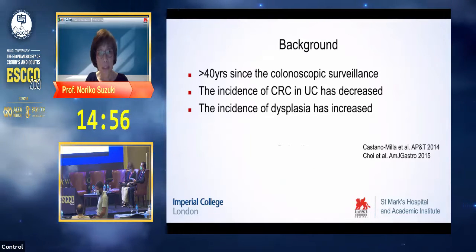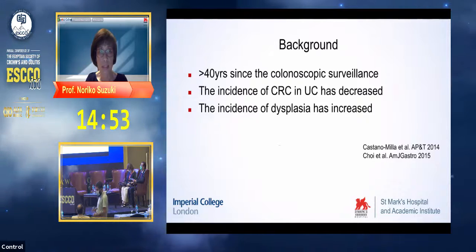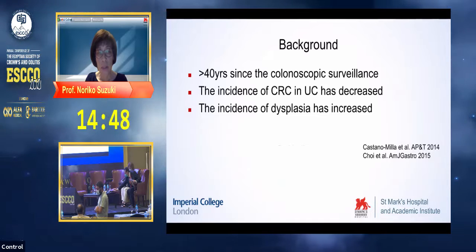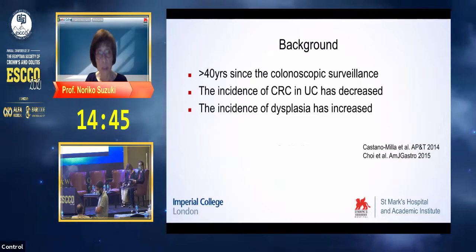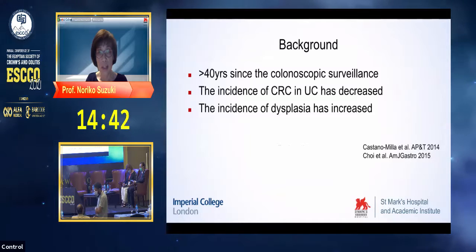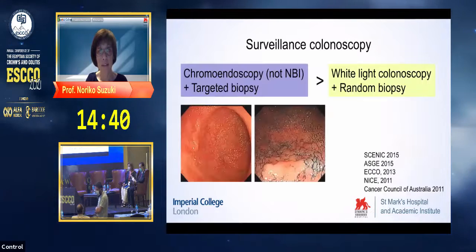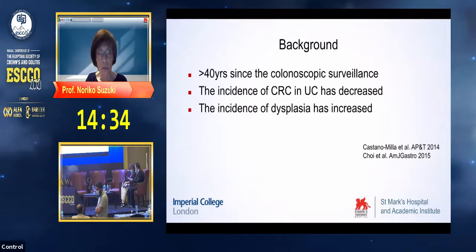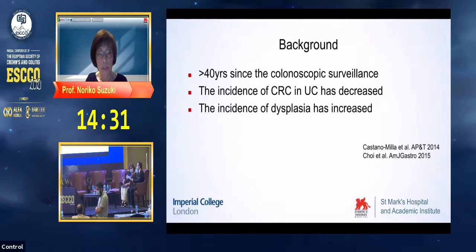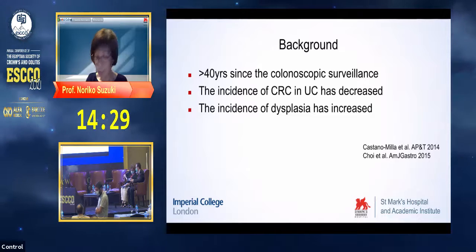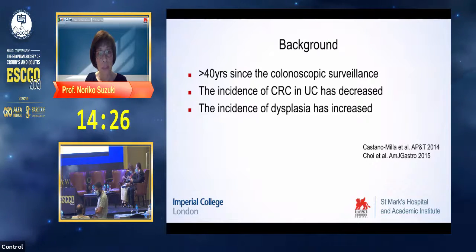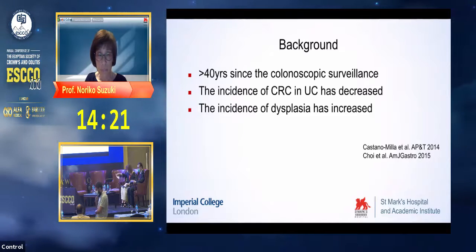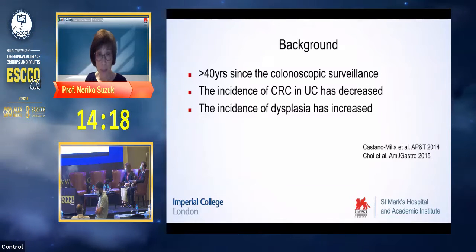More than 40 years have passed since surveillance started. The trend now is that the incidence of colorectal cancer in colitis has decreased, whereas the incidence of dysplasia has increased. This is mainly due to tighter control of inflammation and also the technical advancement in endoscopy, which enables us to see dysplasia at the earliest point and also provide management at the earliest point.